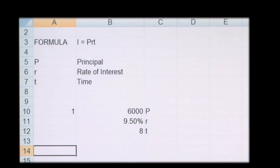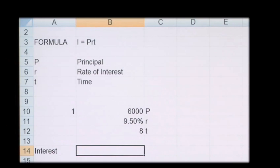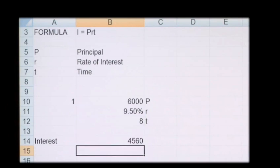Now using the formula, we can calculate the interest as follows: I equals the principal times the interest rate times the 8 years. It's £4,560.